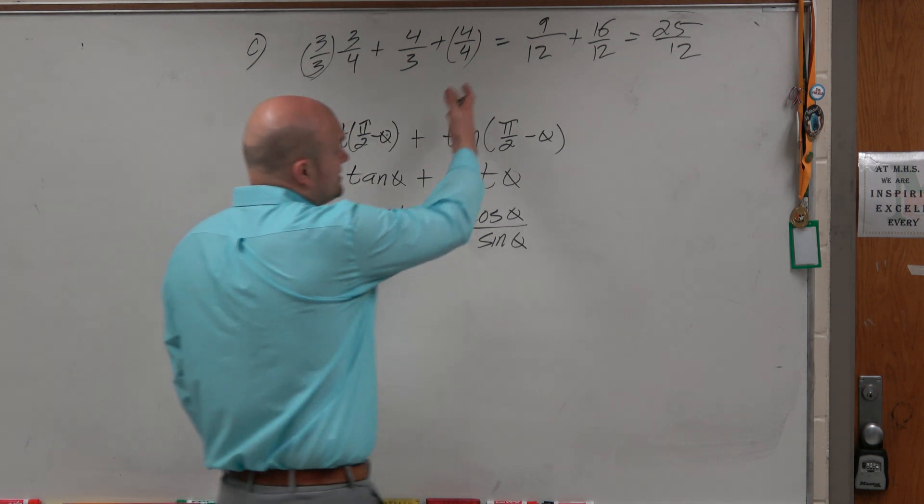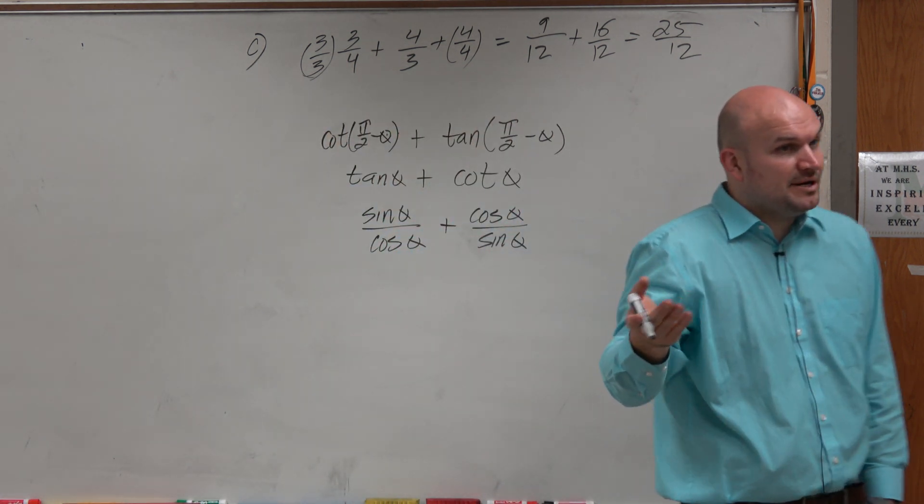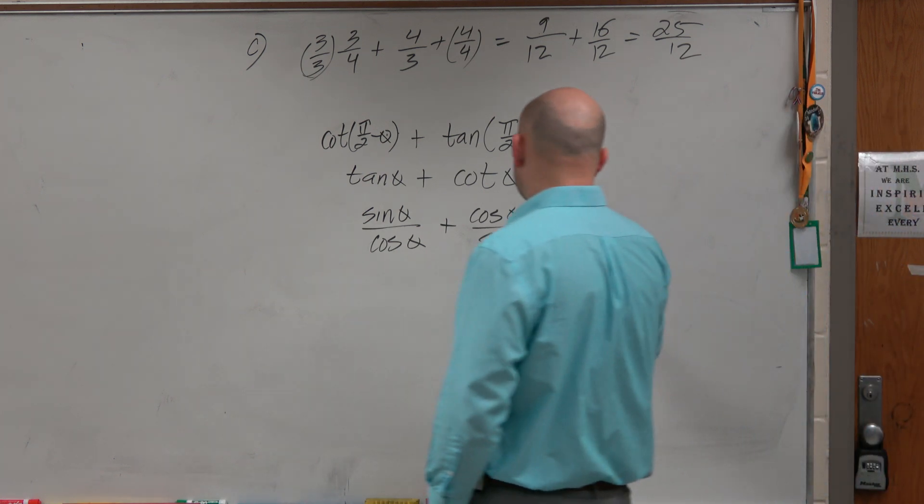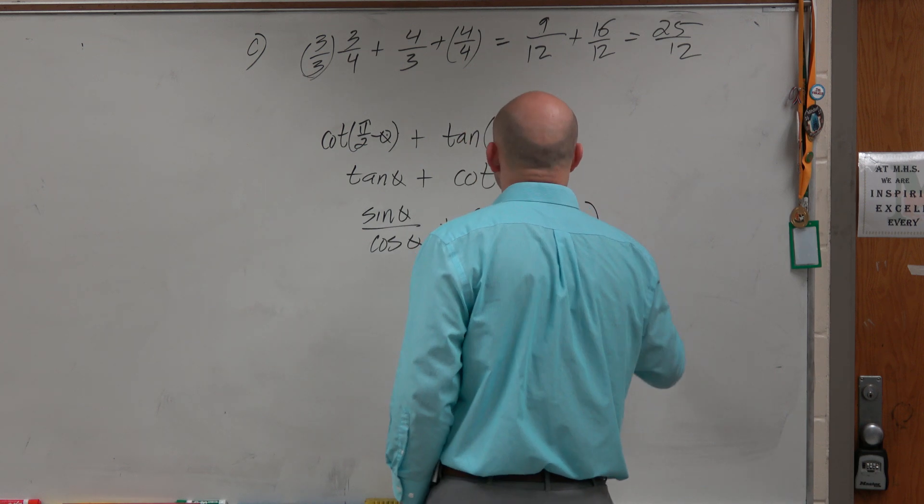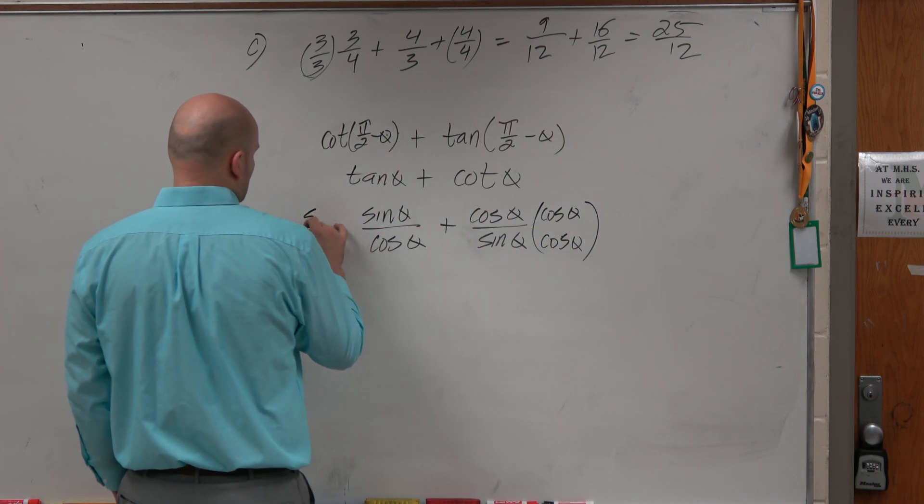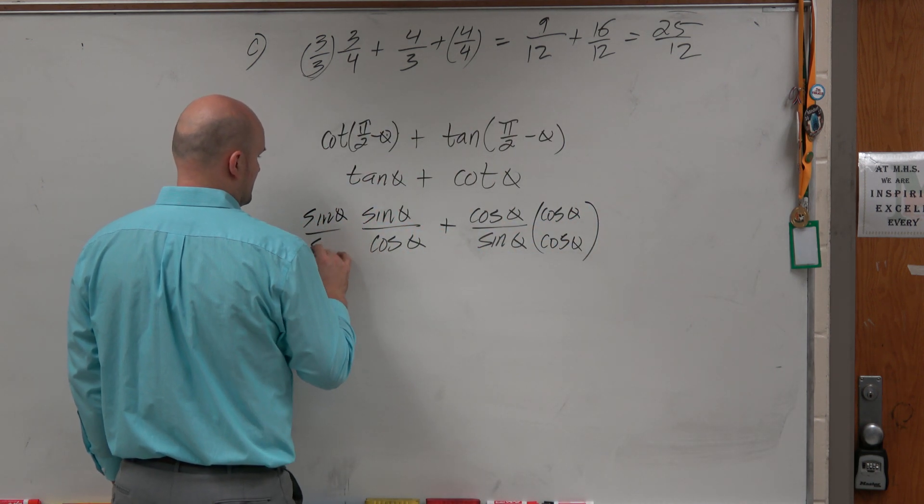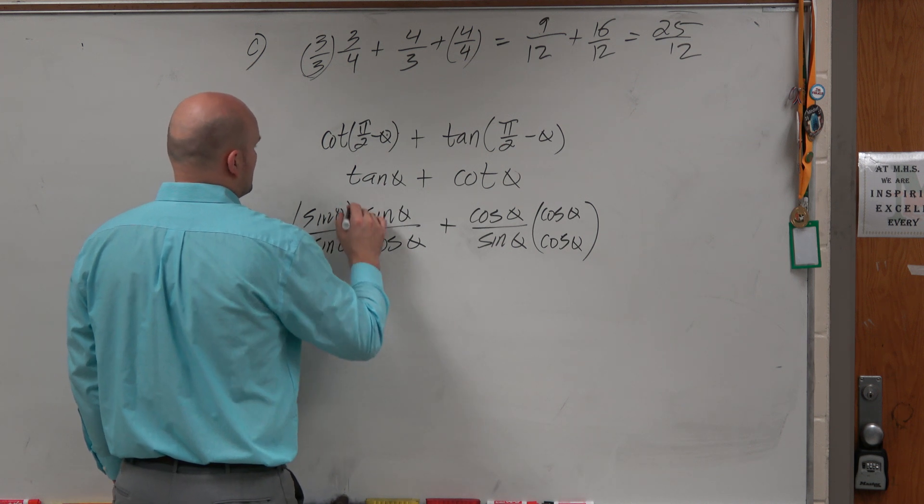Now, just like I did over here, if I need to get common denominators, all I need to do then is multiply this. The common denominator would be sine of theta times cosine of theta, just basically the product.